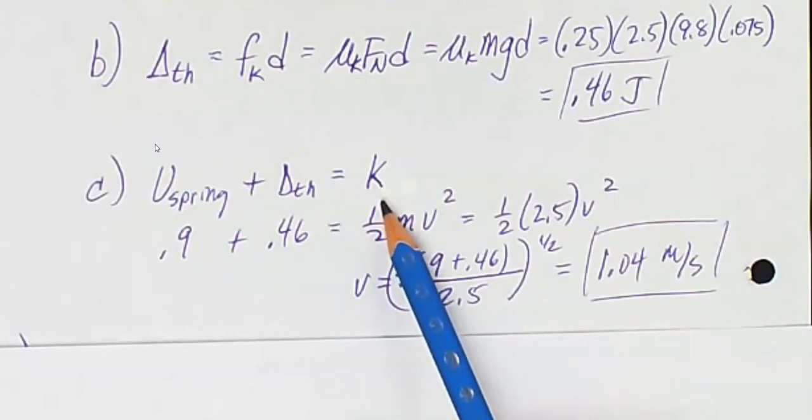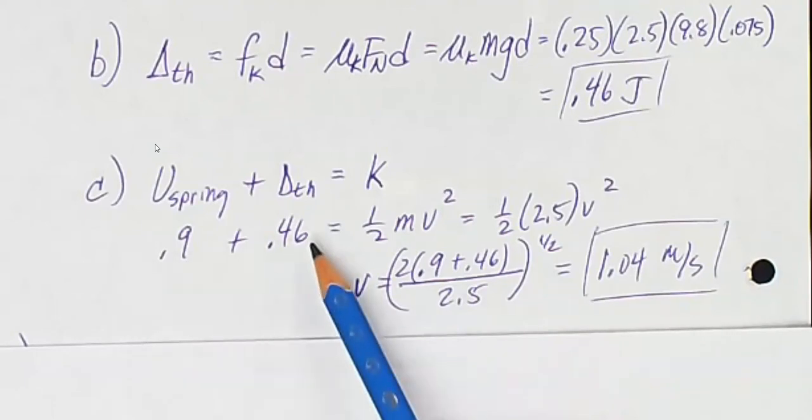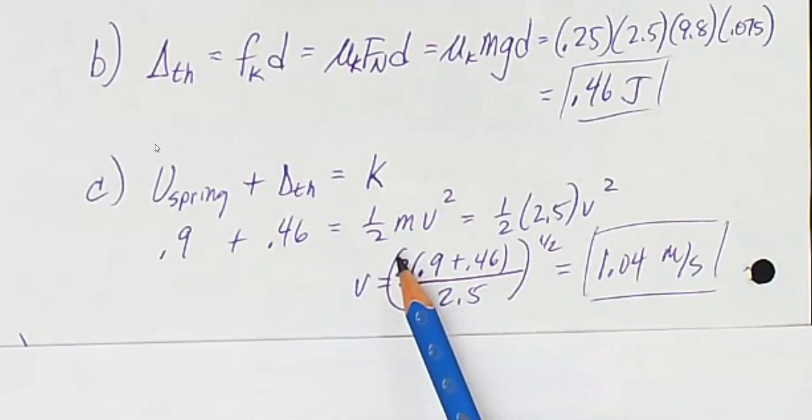So these are my answers from part A and part B. Set it equal to one-half mv squared and solve for v. The block was moving at 1.04 meters per second when it struck the spring.